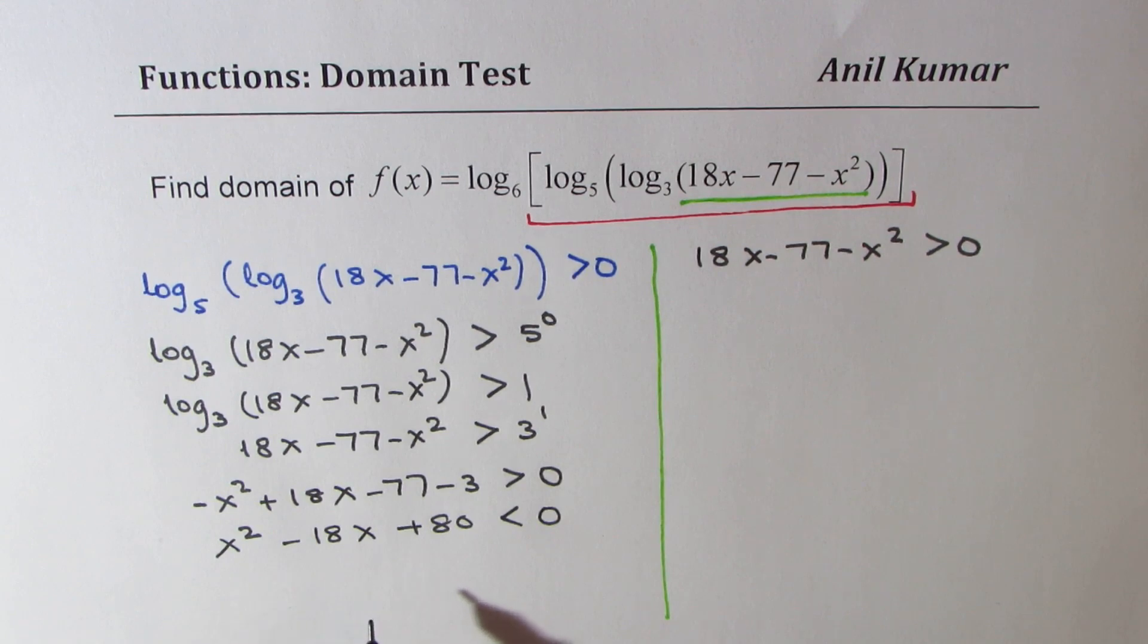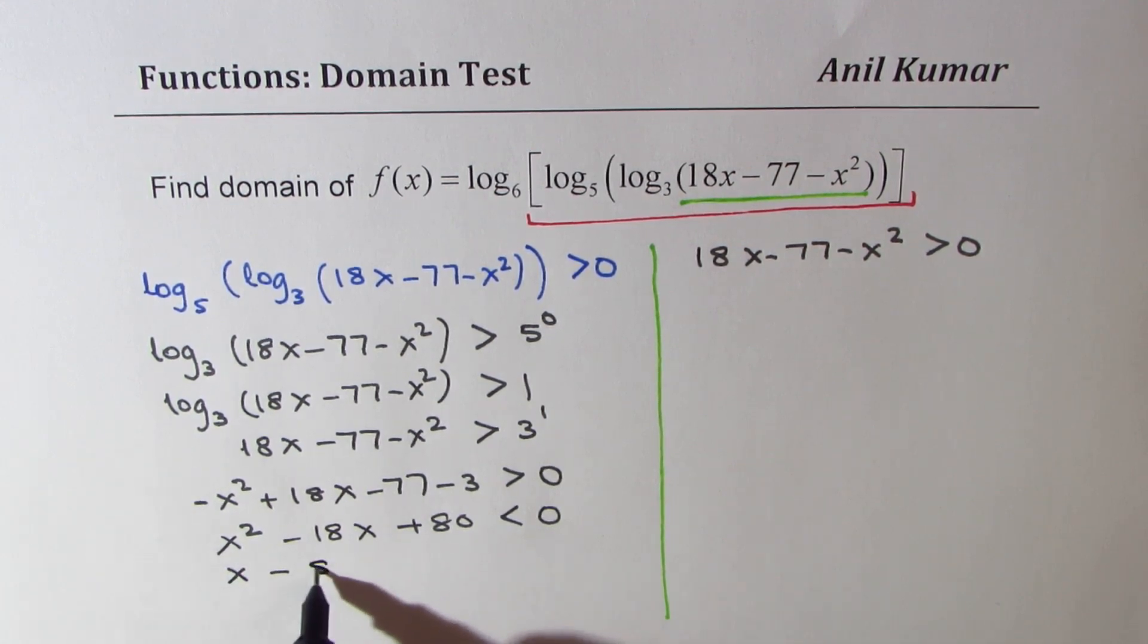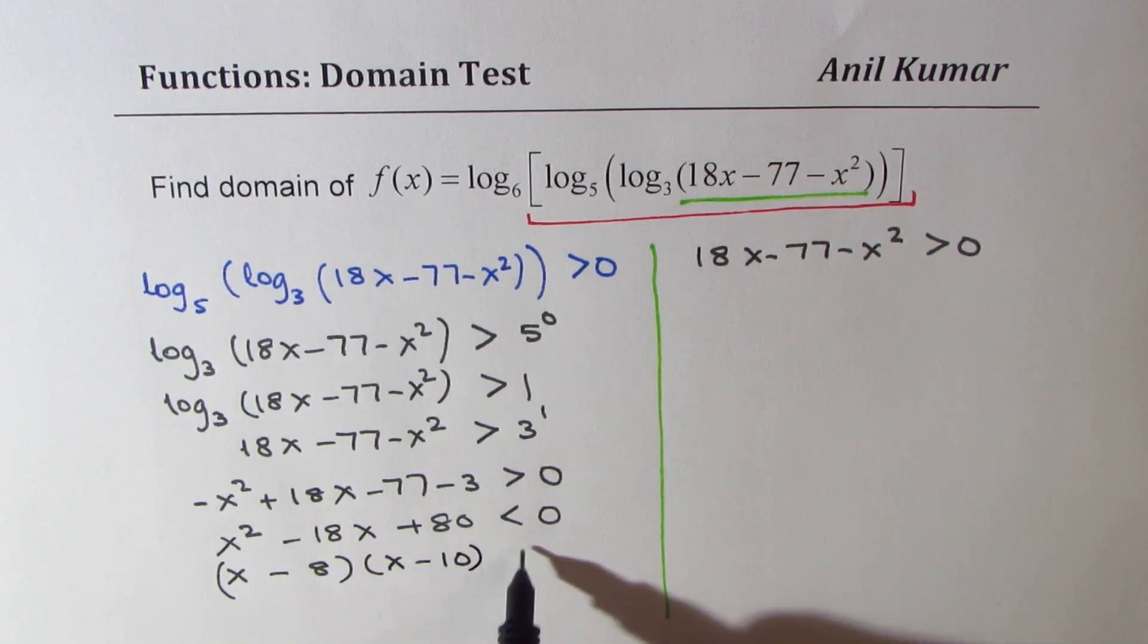80 and 18 product of 8 and 10 will solve the question of factoring. So we get here (x - 8) times (x - 10) less than 0.